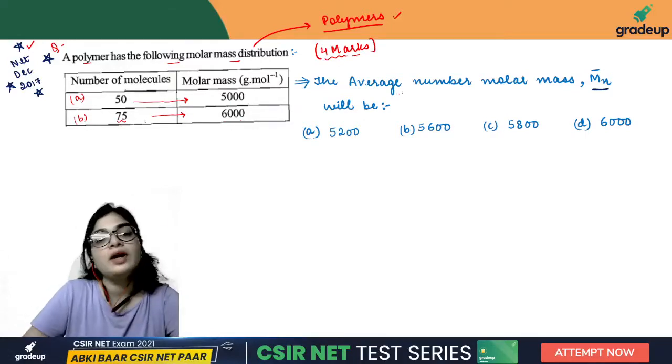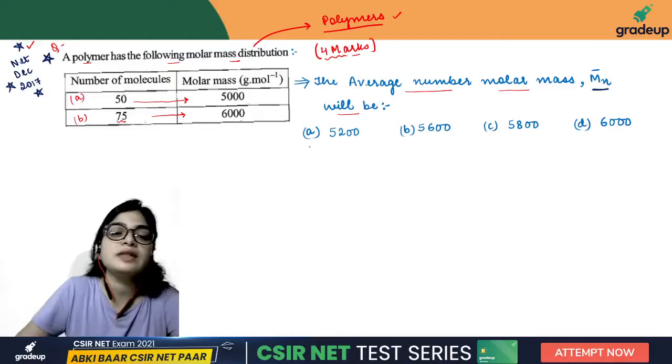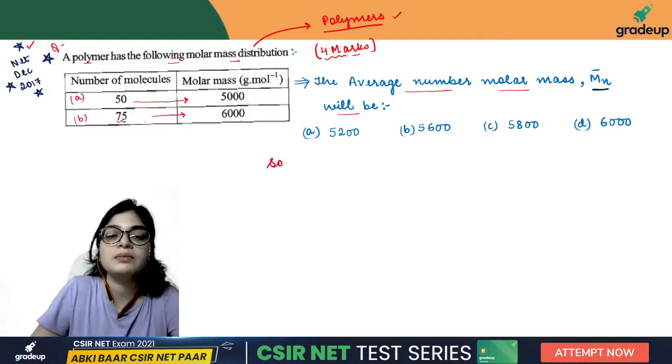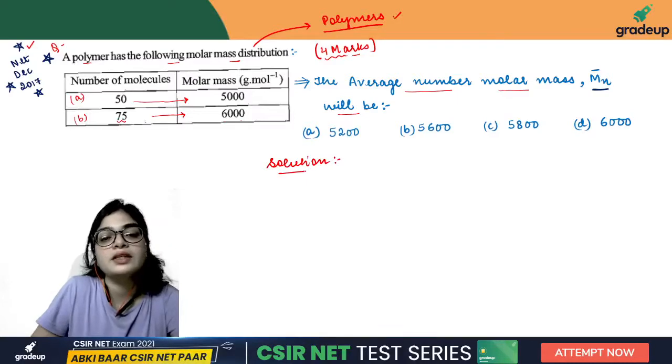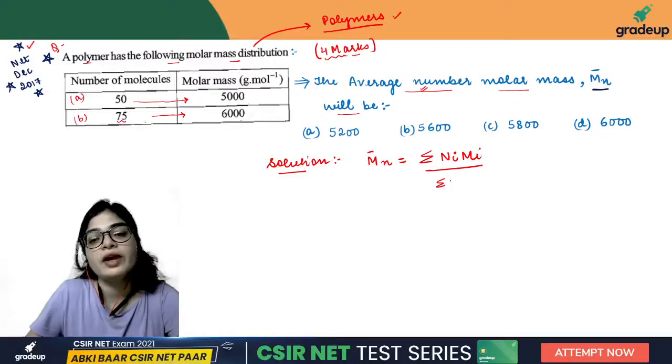You had to calculate the average molar mass. The formula is summation of Ni into Mi divided by summation of Ni.